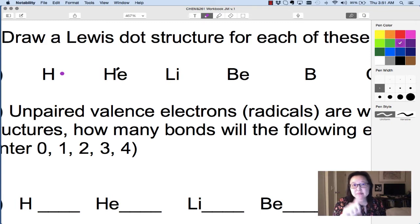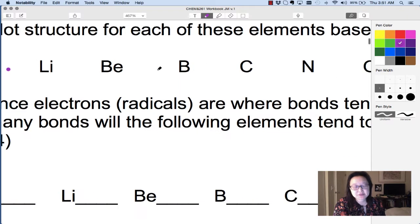Usually, we will just do one electron or one dot on each side of the symbol like that. And then we'll go back and we'll fill in more dots until the valence shell is full. So for example, I'll fill in some of these for you.